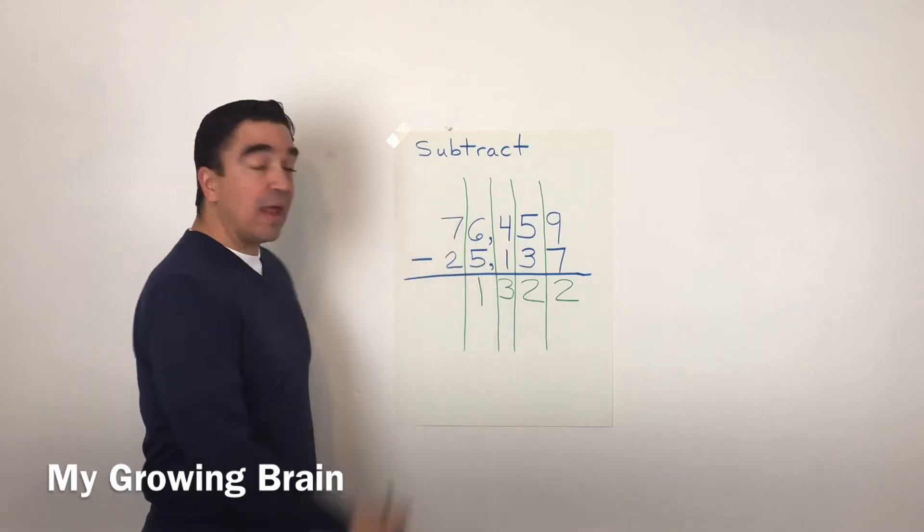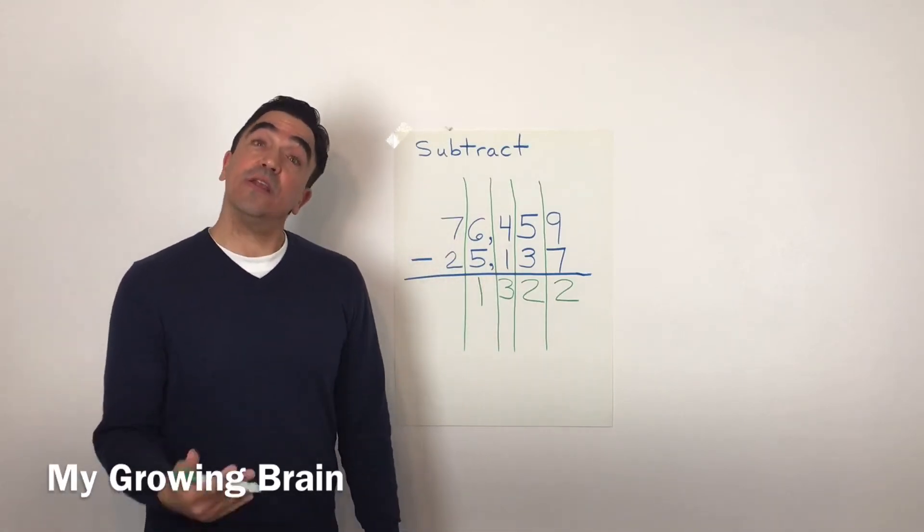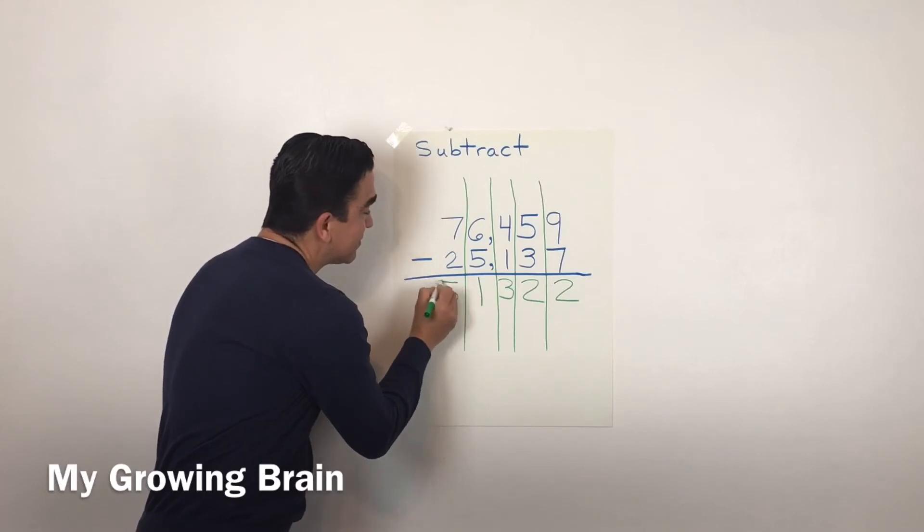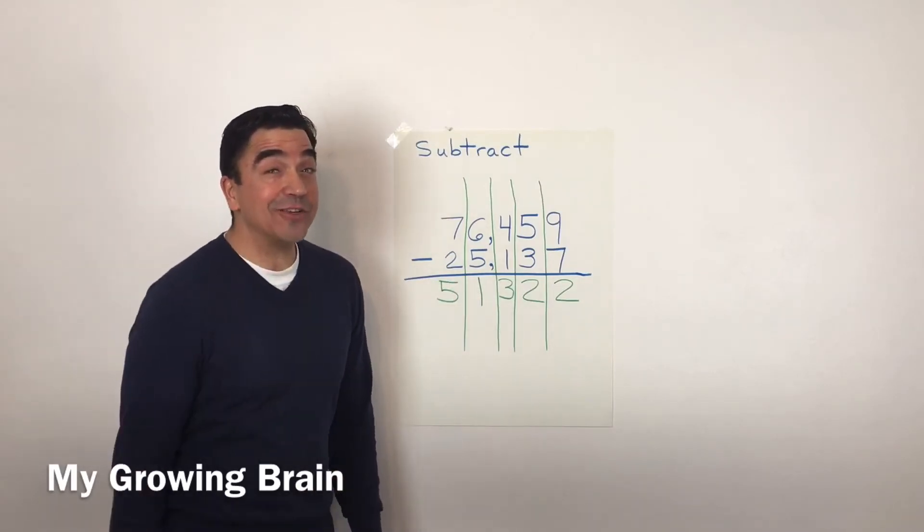Seven minus two is five. Don't forget your comma.